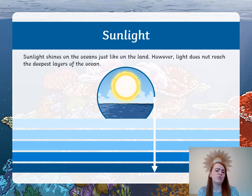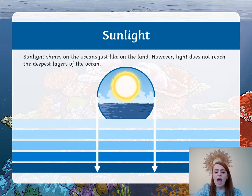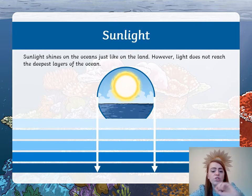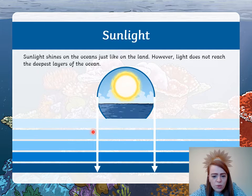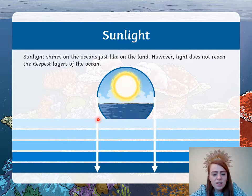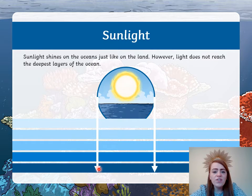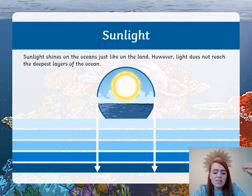Now, going on to some new learning. Sunlight shines on the oceans just like on the land. However, light does not reach the deepest layers of the ocean. You can see here that you've got the sun, and these rows almost represent the different layers of the ocean. The top layers are going to get the most sun, but as you go down deeper and deeper into the ocean, it's harder for these areas to get sunlight — they're going to be darker areas, colder areas, because the light does not reach these deepest layers.